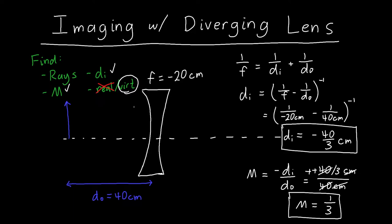We know almost everything we set out to find. Now all we need to do is the ray tracing. When I'm doing ray tracing, I always choose the same two rays. The first one I choose is one that goes from the top of the object straight at the lens.